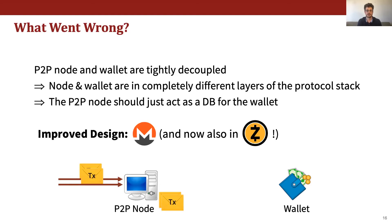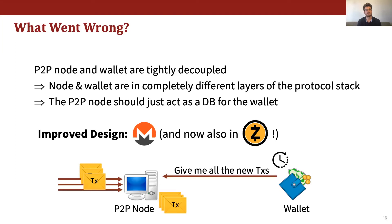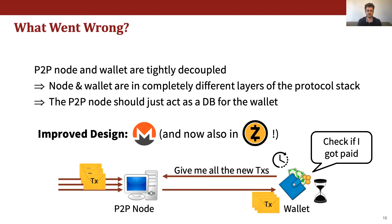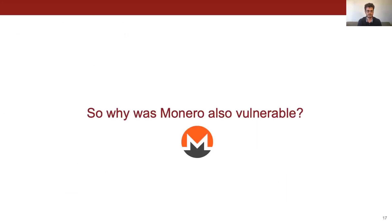In the corrected design, the peer-to-peer node just collects all incoming transactions, stores them, and periodically the wallet — which runs in a separate process or thread — requests all transactions and checks all of them to see if a payment came in. So we might wonder, if Monero already used this design, how did we still manage to attack it? The reason is that there was still some coupling between the peer-to-peer node and wallet part of the Monero client, because of suboptimal design choices in the way the wallet and node periodically synchronize with each other.